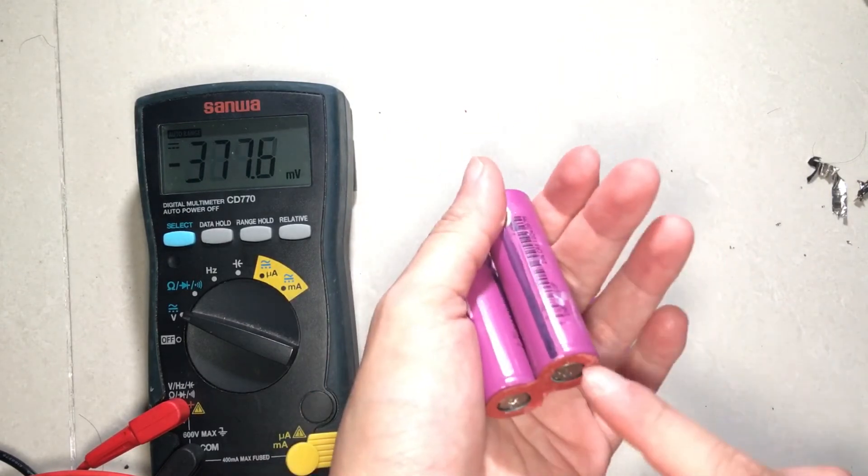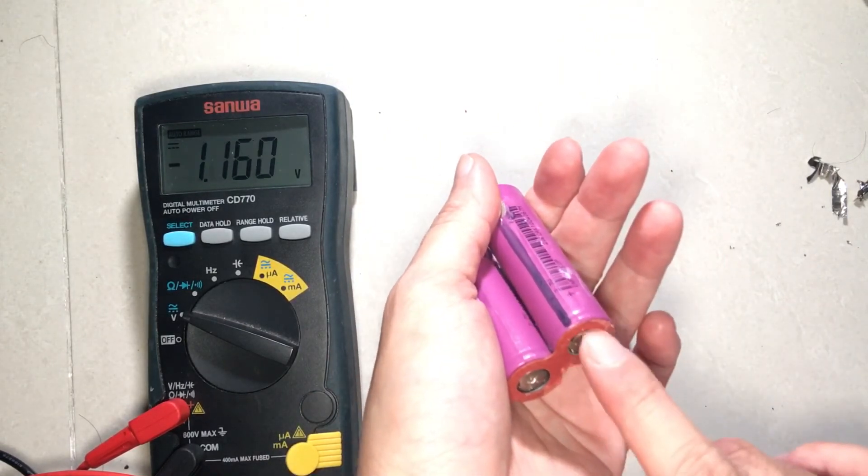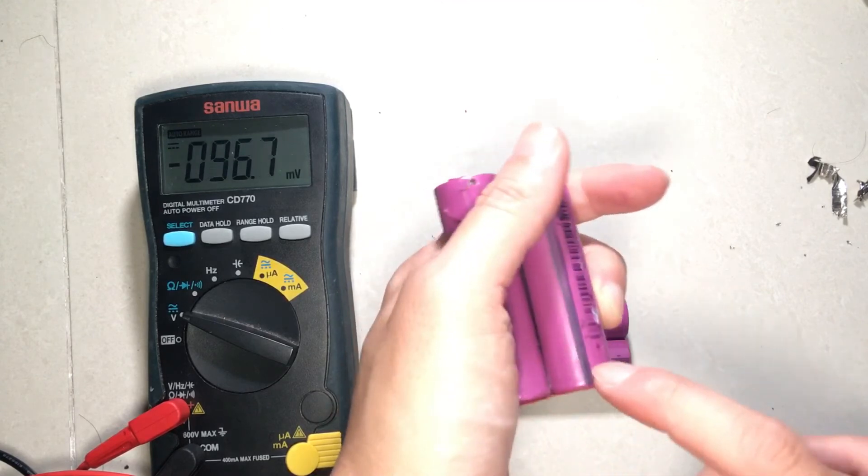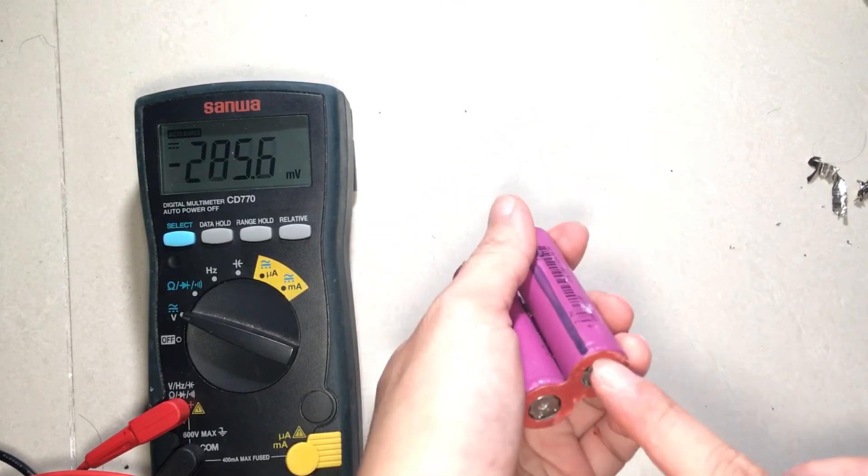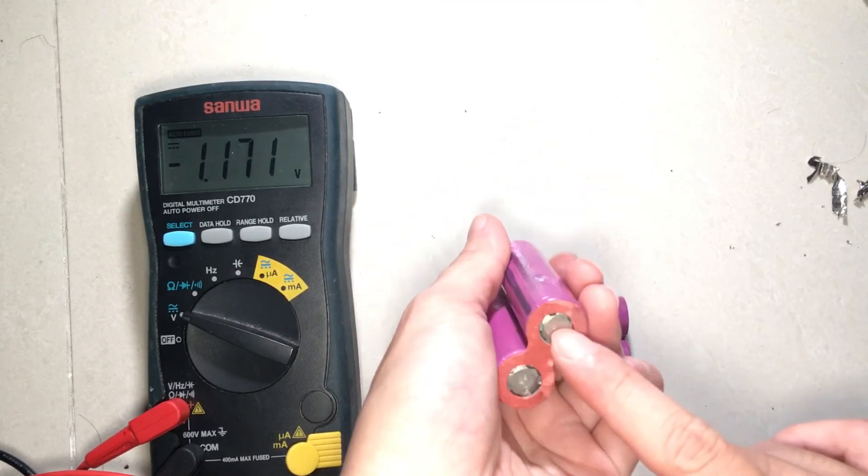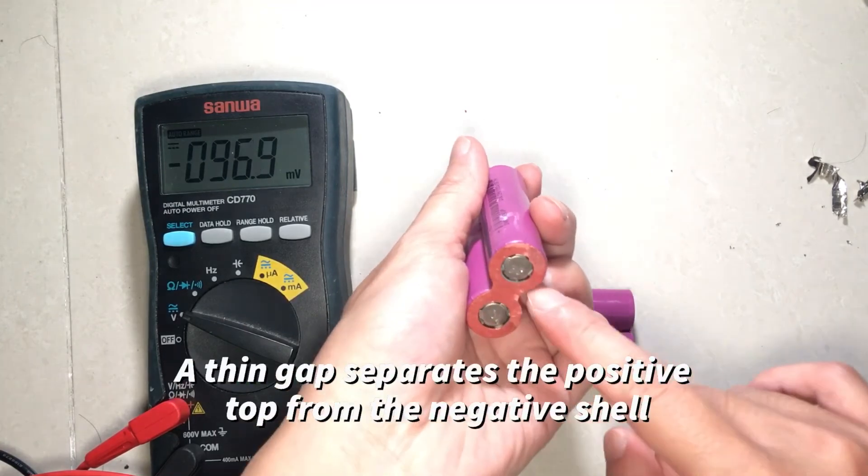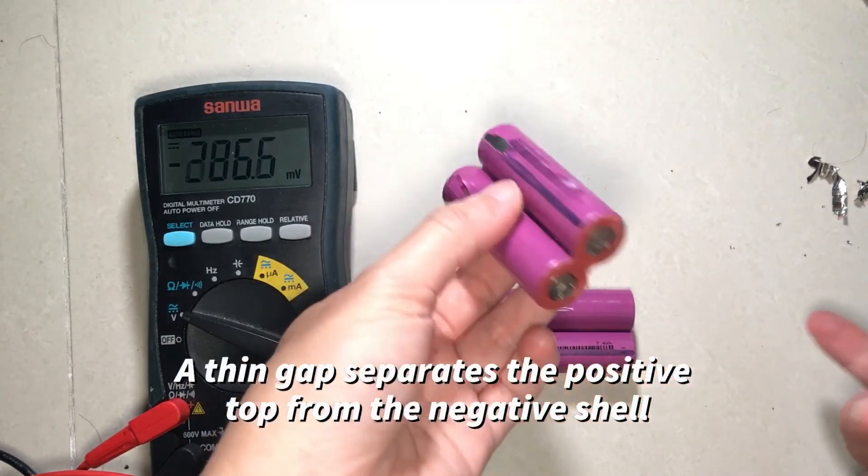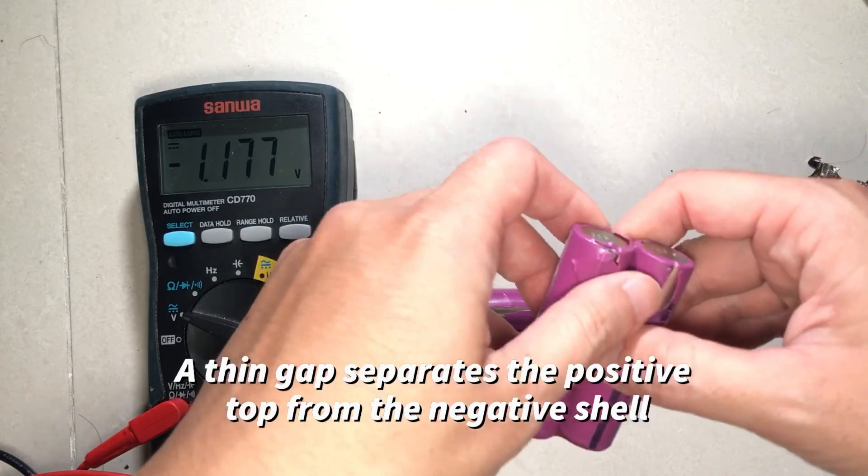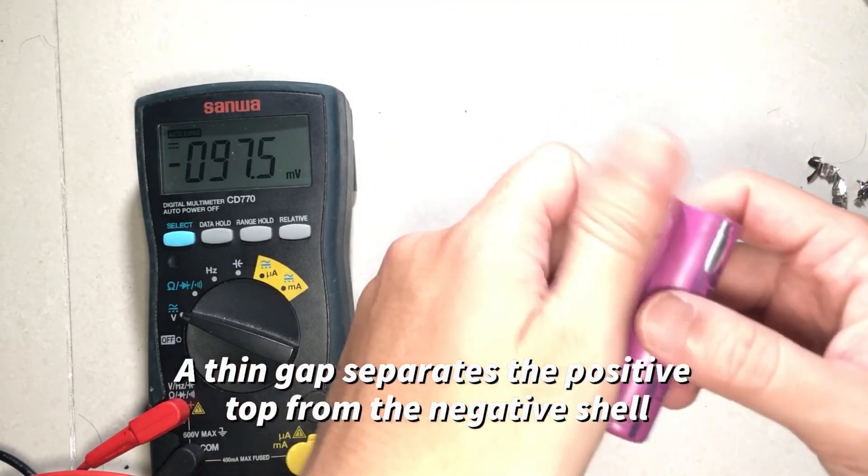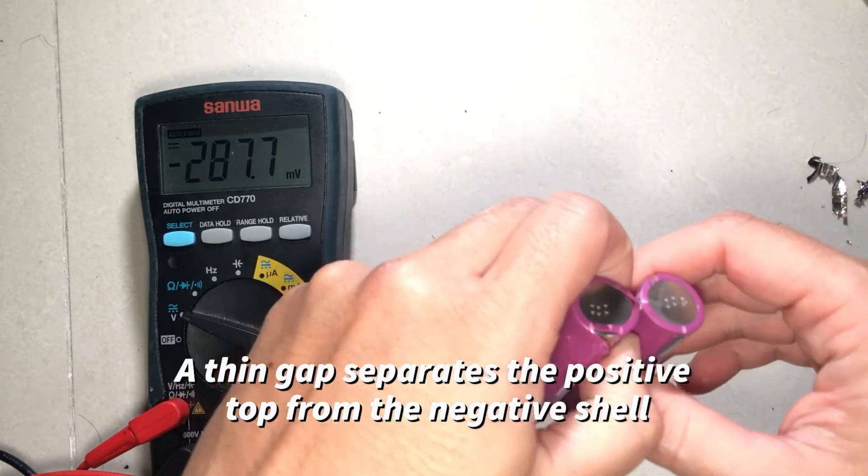So it's still not too bad if I damage the insulation here, but if I damage the insulation here then that's going to be a problem, because the only thing separating the positive and the negative shell is just a very thin layer. So yep, hopefully I don't damage this any further.